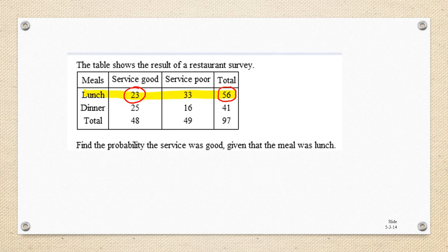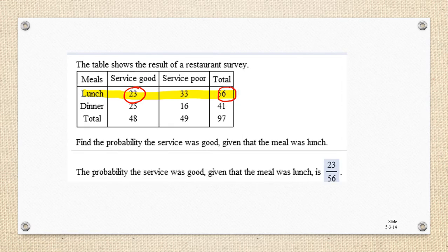This is called a conditional probability because we're finding the probability under the condition that it was only lunch. So the probability that service was good given that the meal was lunch is going to be 23 over 56, which is approximately 0.41. Now what we would like to know is: is the probability of good service affected by knowing which meal occurred? We're going to compare the probability of service being good at lunch with the overall probability of service being good.